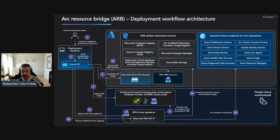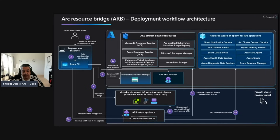The `az arcappliance deploy` command deploys the on-premises instance of Azure Arc bridge as an appliance VM, bootstrapping it to a Kubernetes management cluster. The `az arcappliance create` command then creates the Azure Arc resource bridge in Azure as an ARM resource, establishing the connection between the ARM resource and the on-premises appliance.